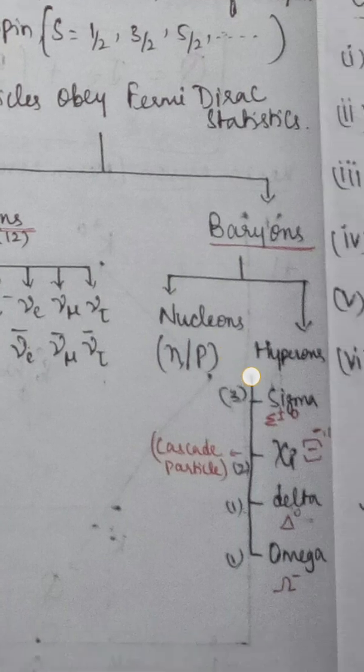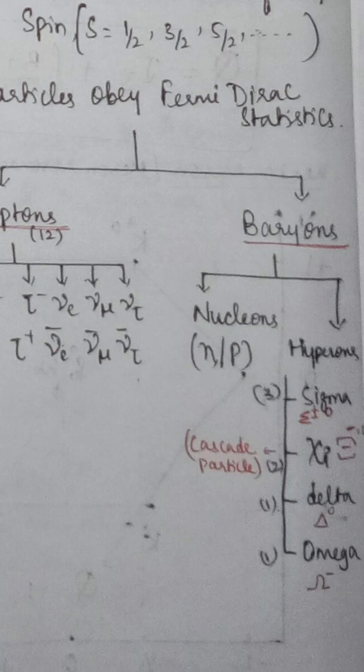Next are baryons. Baryons have two categories: nucleons and hyperons. Nucleons are protons and neutrons, which are found within the nucleus.